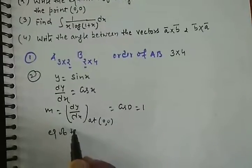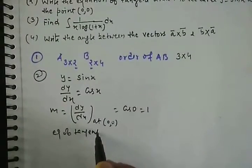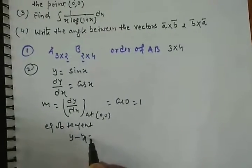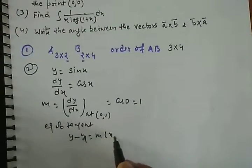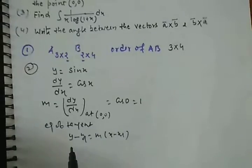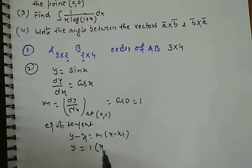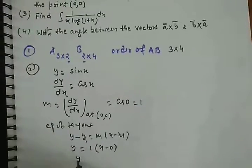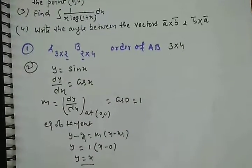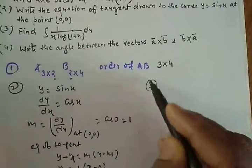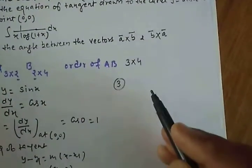Now we want to write equation of tangent, so equation of tangent will be, the formula is y minus y1 equals m into x minus x1. Because point (0,0), it is equal to 1 times x minus 0, that is y equal to x. This line is equation of tangent. Okay, now question number 3.